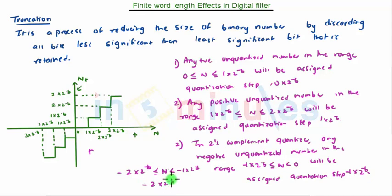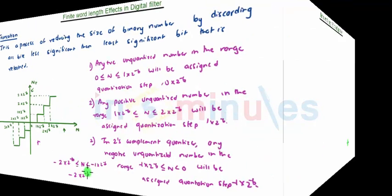Now, in the fixed-point number system there are 3 types of number representation. The effect of truncation on all positive numbers is the same across all 3 representations. However, the error due to truncation of a negative number depends on the type of representation of that number.